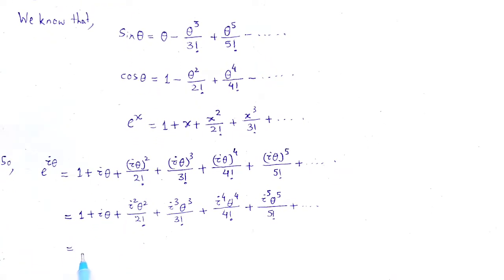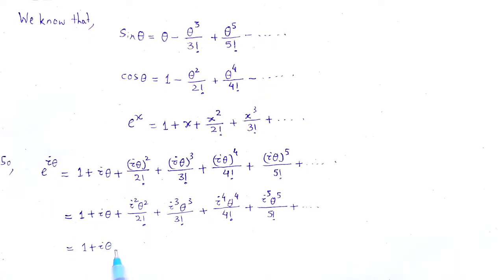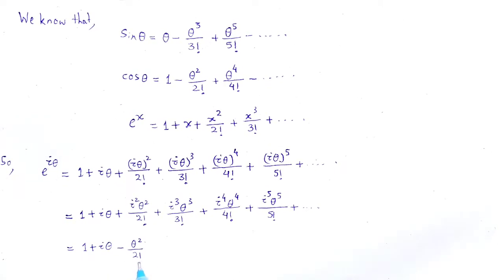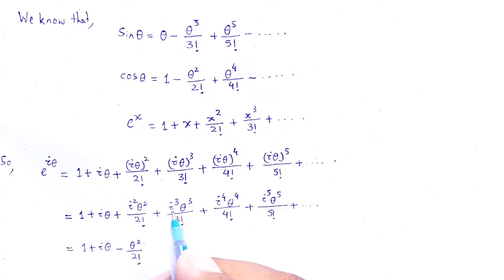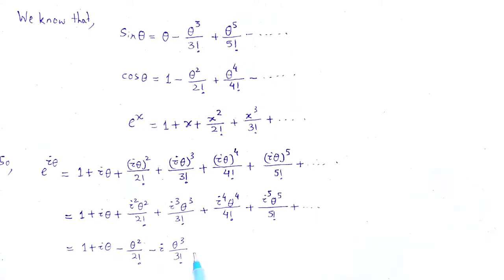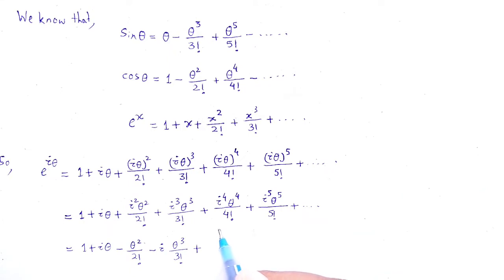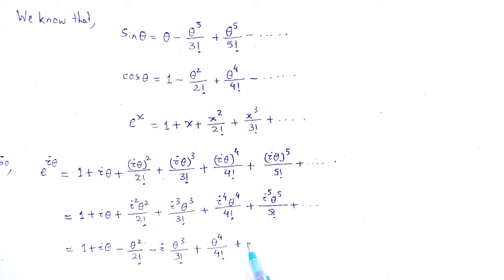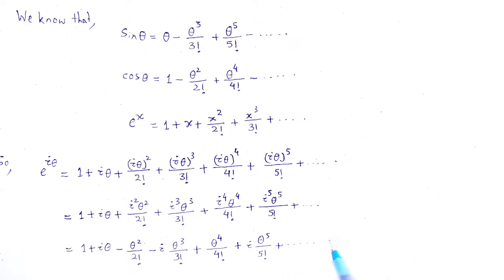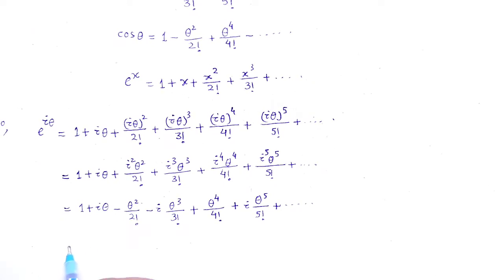This is equal to 1 plus i theta. Here i squared equals minus 1, so minus theta squared divided by 2 factorial. Again, i cubed equals minus i, so minus i theta cubed divided by 3 factorial. Plus i to the fourth equals 1, so theta to the power 4 divided by 4 factorial. Plus i to the fifth equals i, so i theta to the power 5 divided by 5 factorial, plus dot dot dot.